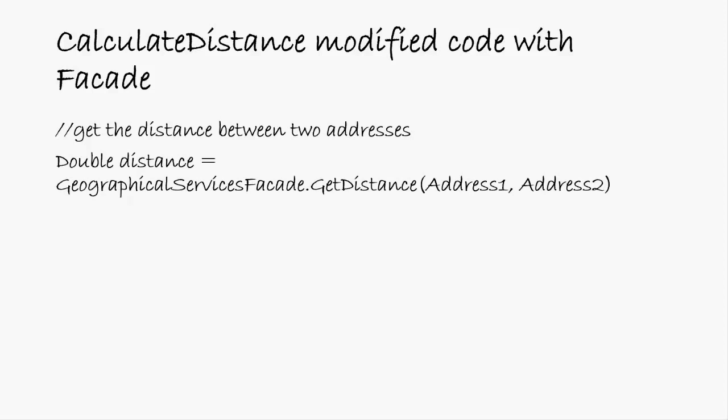The client class calls GeographicalServicesFacade object dot get distance and passes the two addresses, and in return it gets the distance as a double data type. This is a very simple interface between the client and the Geographical Services Library because of the introduction of the GeographicalServicesFacade.